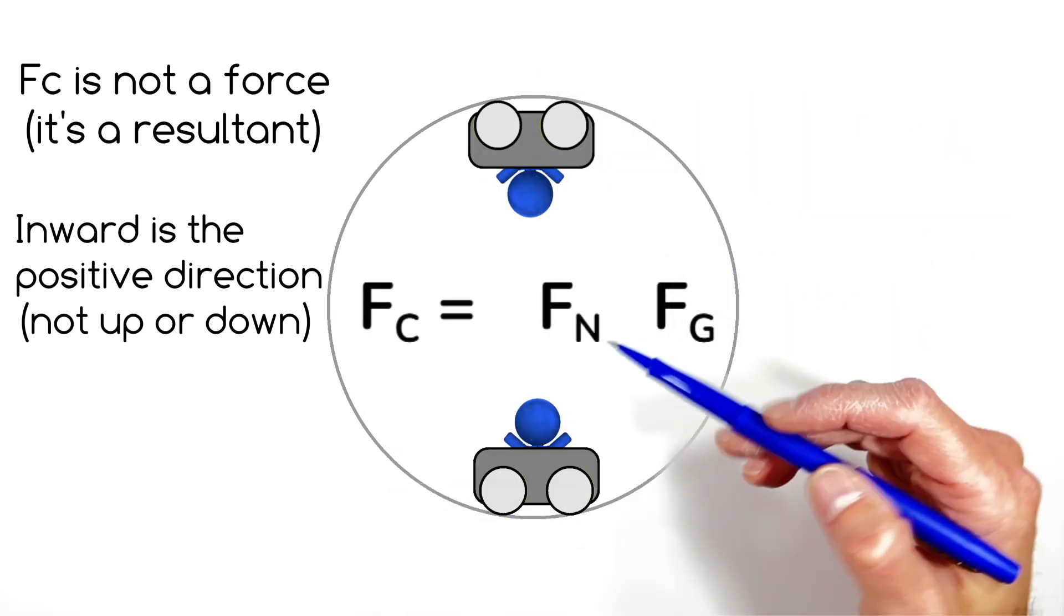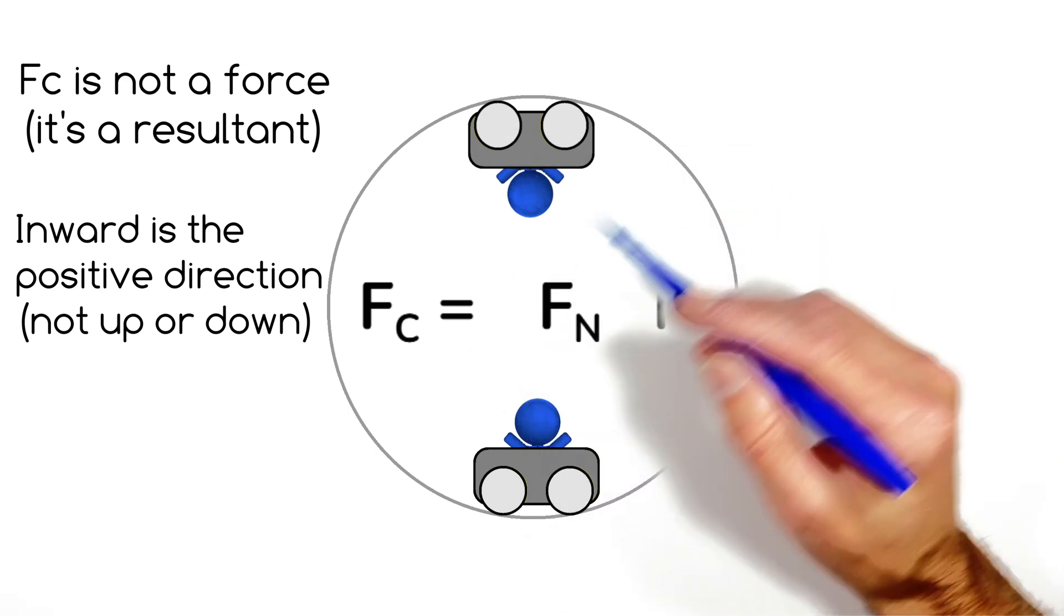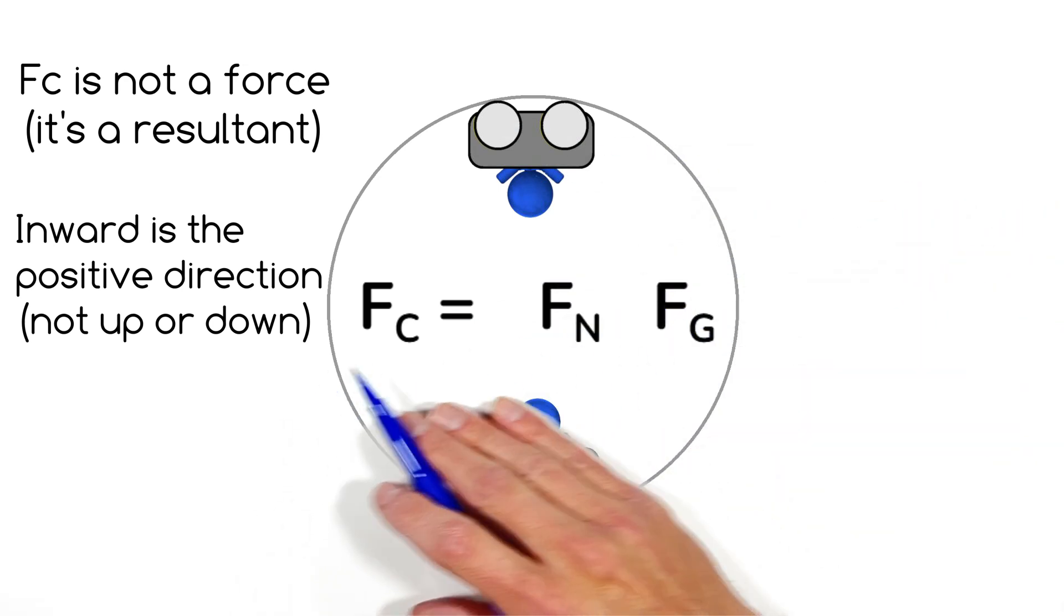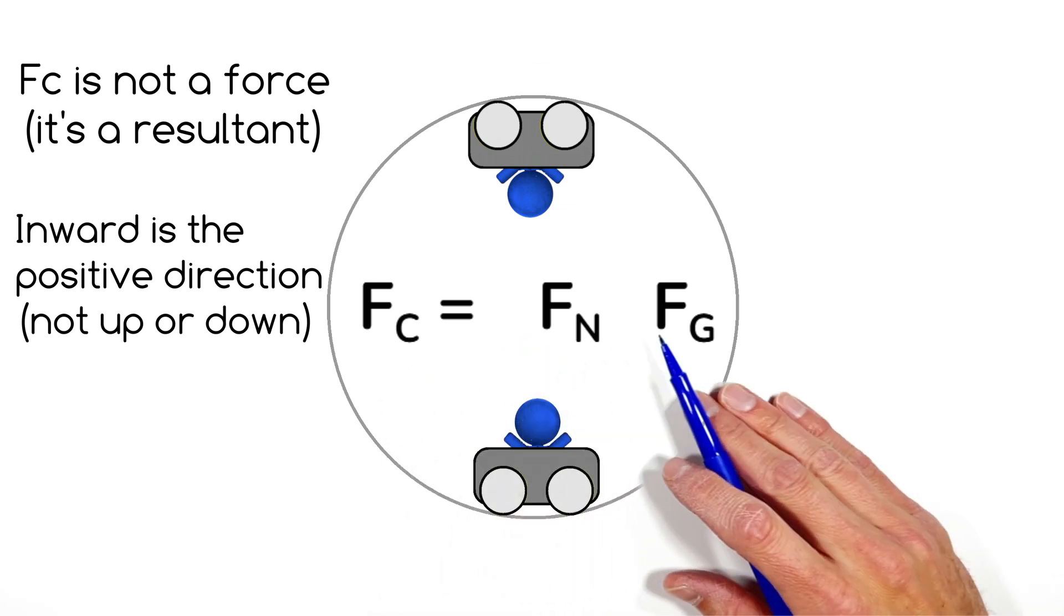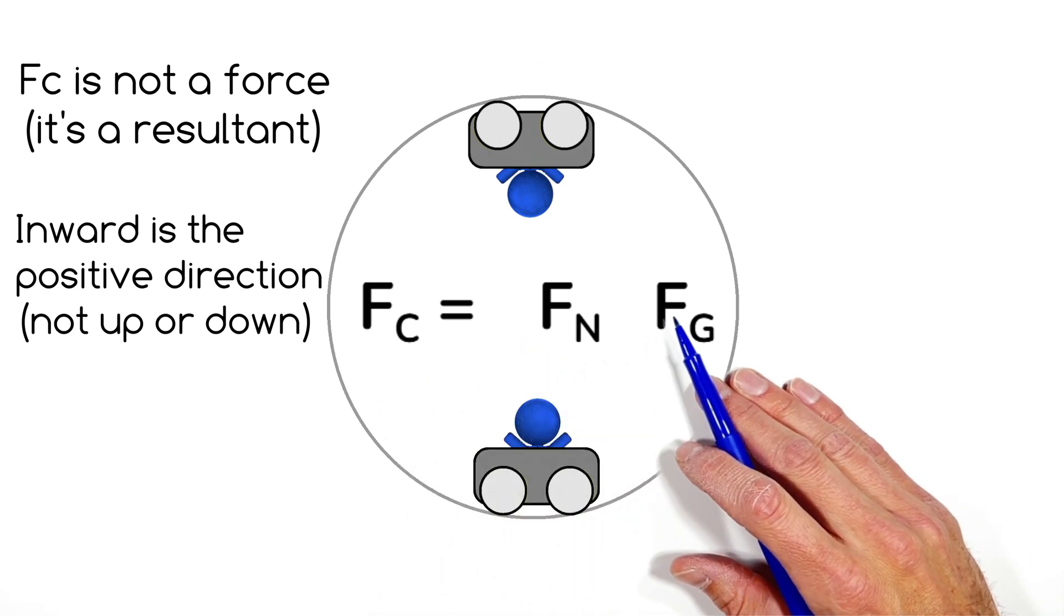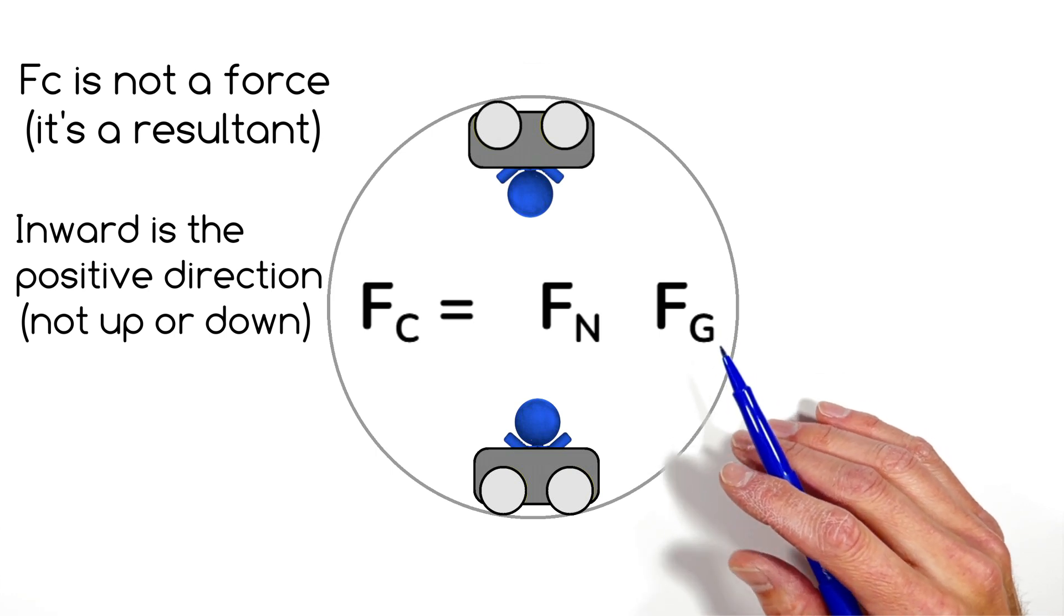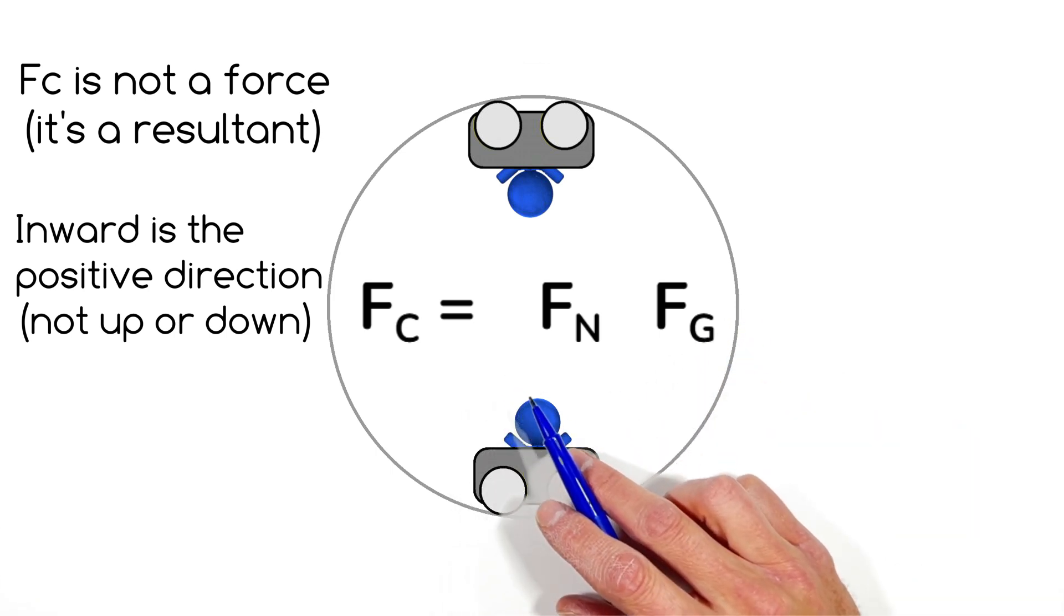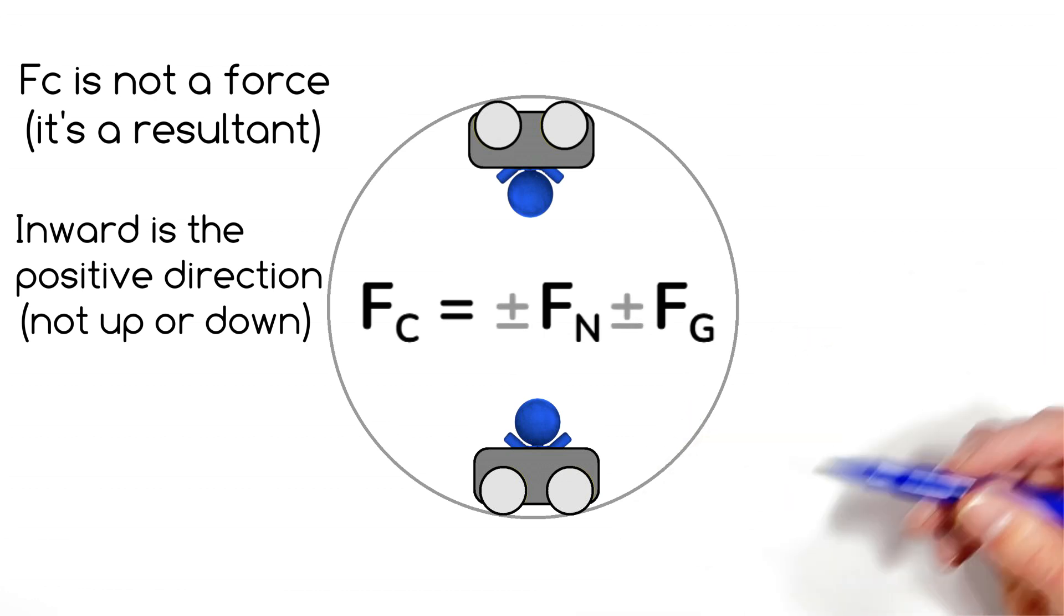So in all these problems that we're dealing with, whether it's the car or the roller coaster or the airplane or the bucket of water, we're going to say that the centripetal force is equal to the normal force and gravity or the weight of the object. And the issue that we have to figure out and make situational, and that's going to take a little bit of thinking, is whether or not these normal and gravity terms are positive or negative.